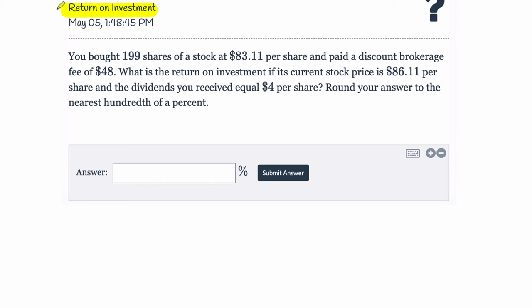So let's read the problem and then we'll explain really what we're doing here. You bought 199 shares of a stock and you paid $83 for each of those shares. You also had to pay to buy them. That's the discount brokerage fee. So to get access to those stocks, you have to pay a fee.